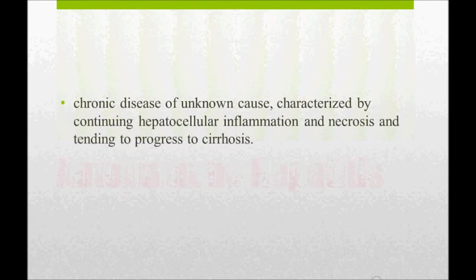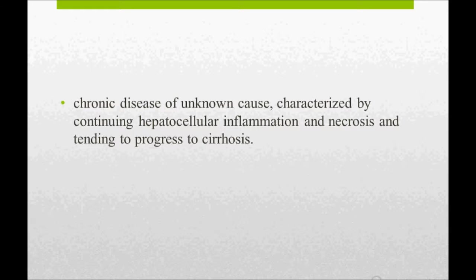I would like to define autoimmune hepatitis: it is characterized by hepatocellular inflammation and necrosis, and ultimately it leads to cirrhosis. In USMLE, sometimes they will not give the exact history of autoimmune hepatitis — it can present as hepatocellular inflammation in the initial stages rather than the complete stage like cirrhosis.